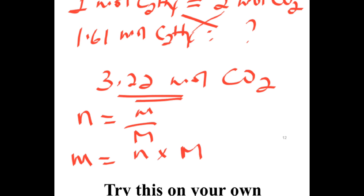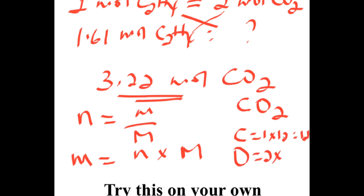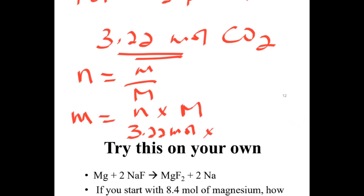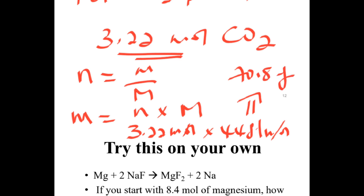The molar mass of carbon dioxide: carbon is 12, oxygen is 16 times 2 equals 32, total is 44 grams per mole. So 3.22 moles times 44 grams per mole equals approximately 141.68 grams of carbon dioxide is produced.